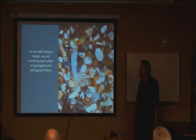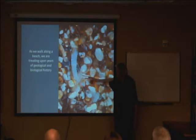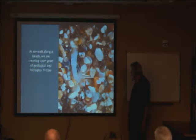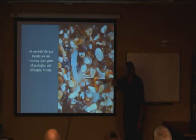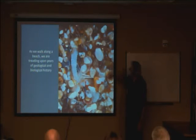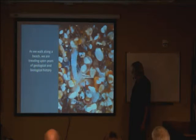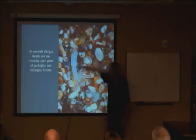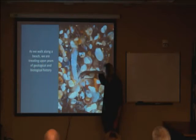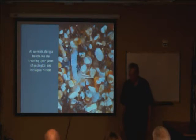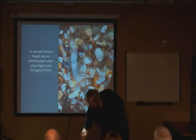This is some sand from Hamoa Beach in Hana. You see it has a sponge spicule, and a little foraminifera. Shell fragments, a lot of stuff from the volcano. And this one I never did figure out what it is — I've asked a lot of people. So that still is an unidentified object of some sort.